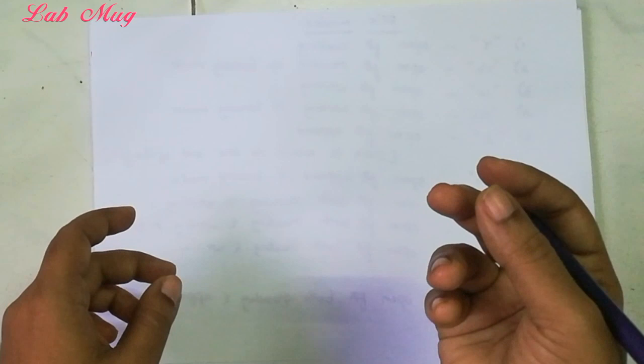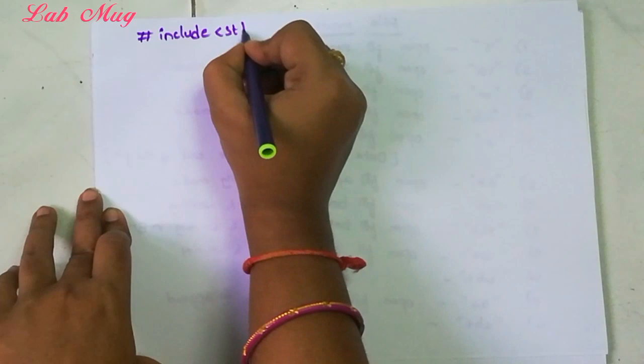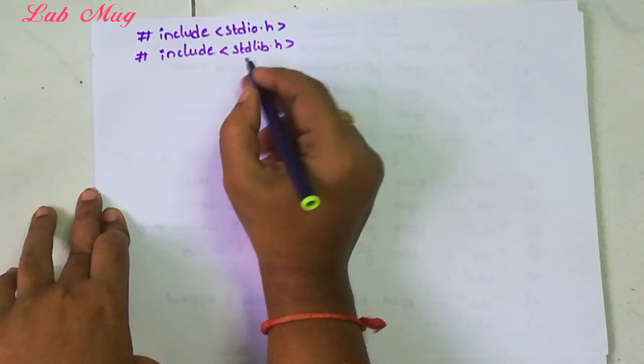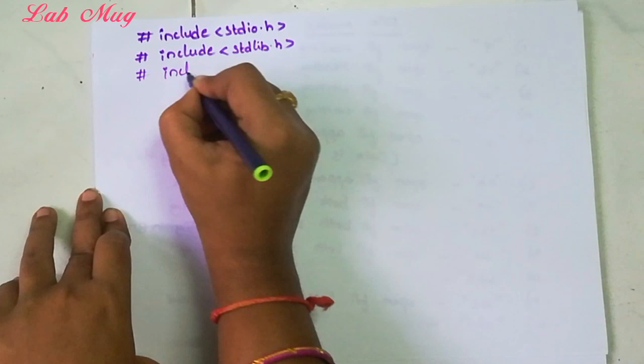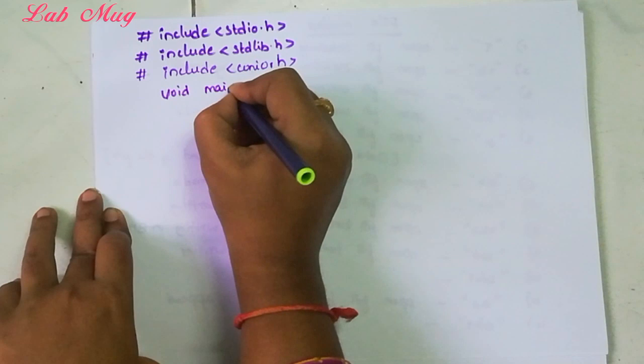I'll show directly in the lab. First of all, a sample program: hash include stdio.h, hash include stdlib.h. First, compulsory when using files we need to include stdlib. We need to include that file name. Next, hash include conio.h for clear screen. If we want to use clear screen we need to include that file. Next, void main.